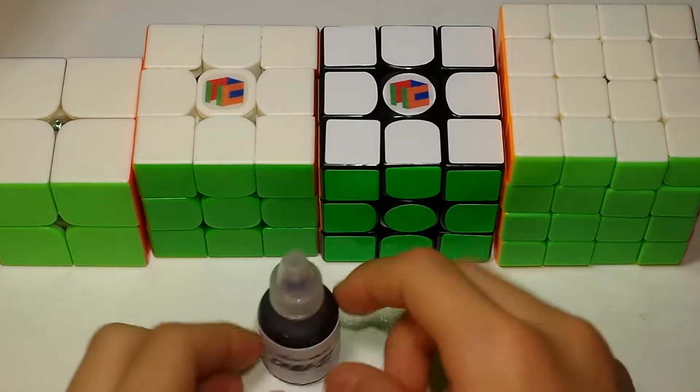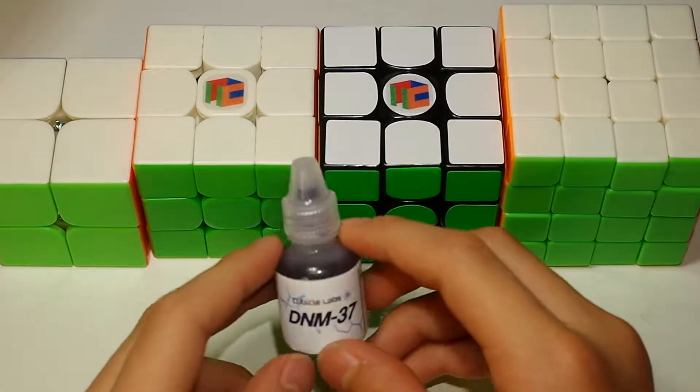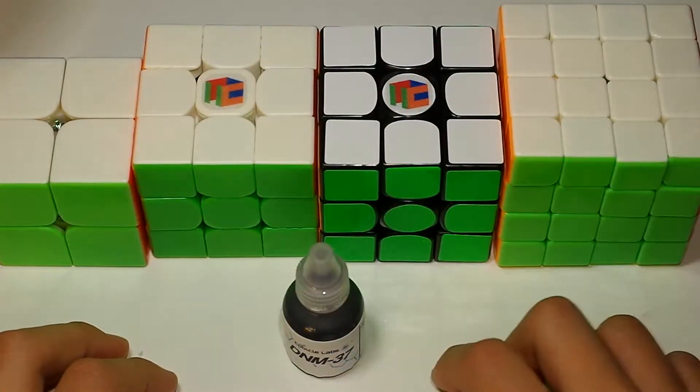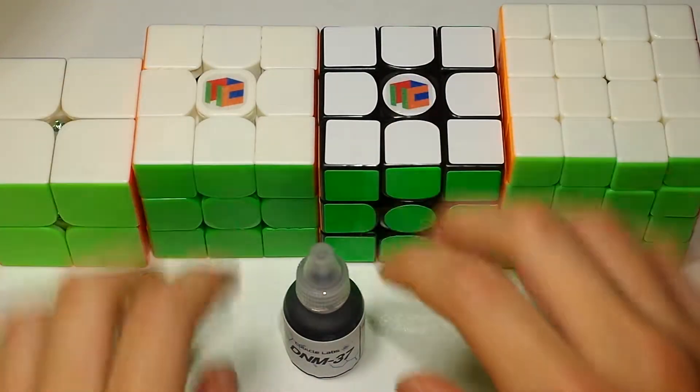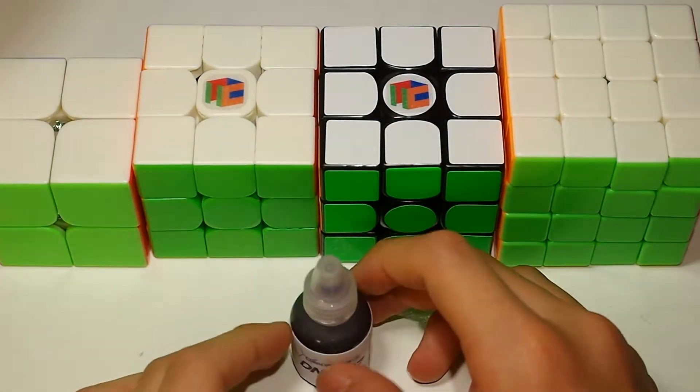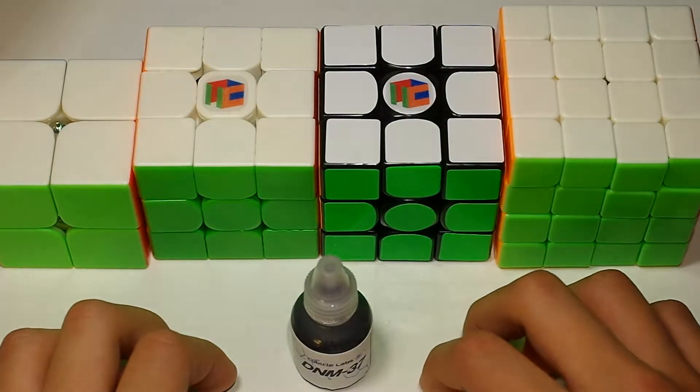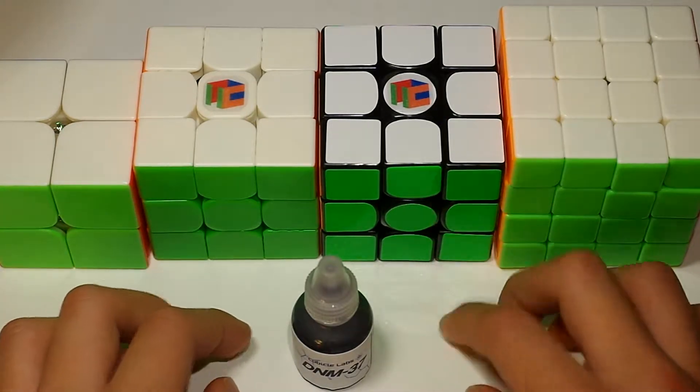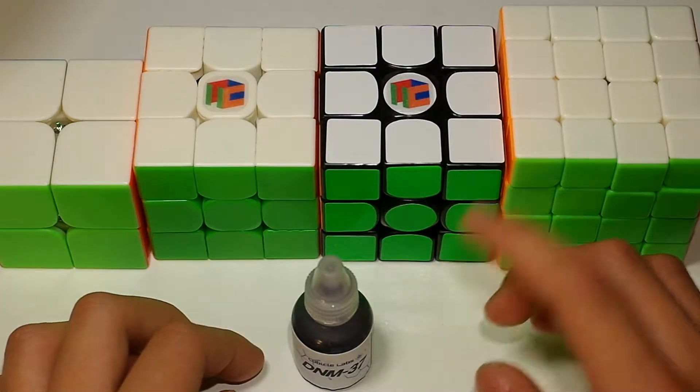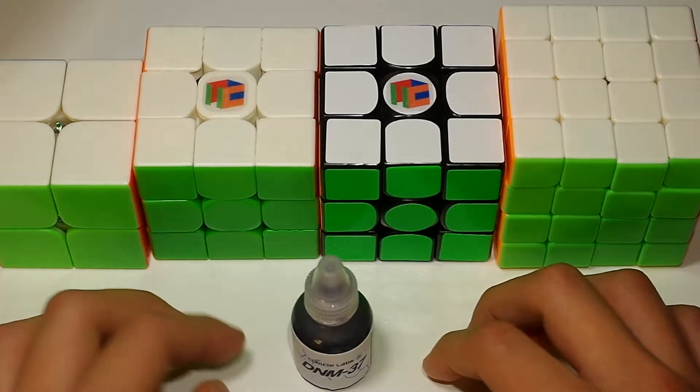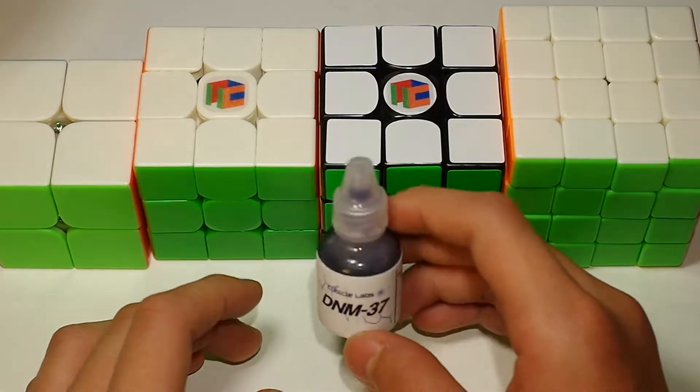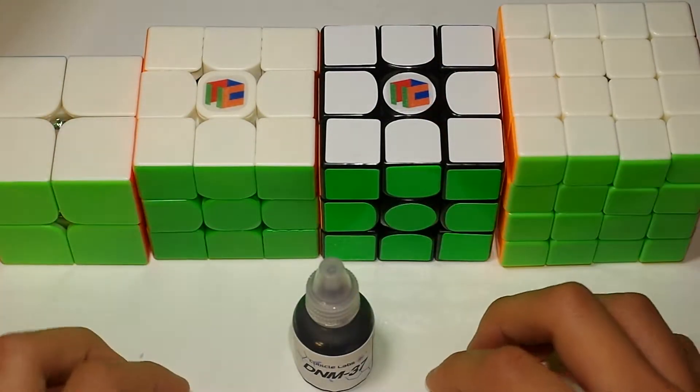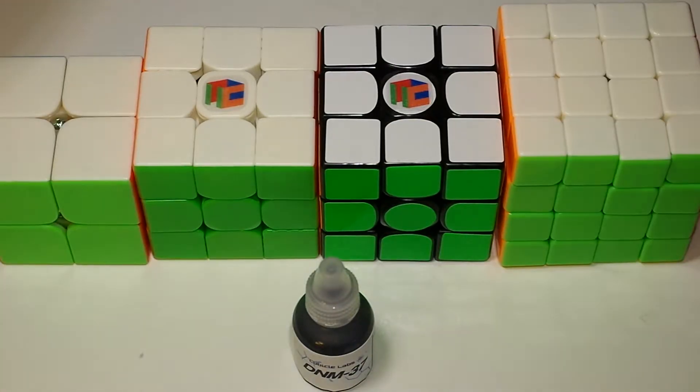So that just about wraps up the testing of the DNM 37. My initial impressions after trying out these cubes a little bit - it doesn't really change the feel of the cube. The cube still retains its feel, you could say, but it does speed it up quite a bit. And I'm not sure how, but it also increases the performance. There are less lockups and it can corner cut better. So DNM 37 - I would highly, highly suggest this. It will really speed up your cubes and get your times faster. Thank you guys for watching. J-Cube out.